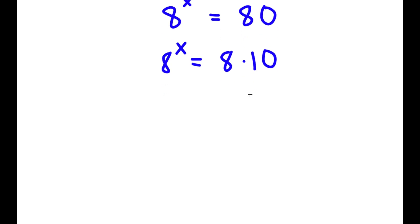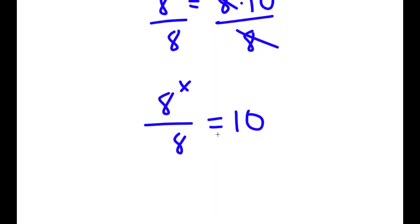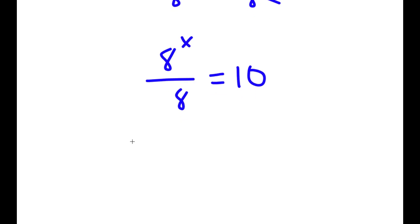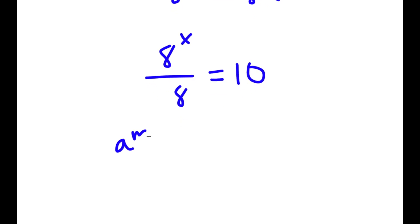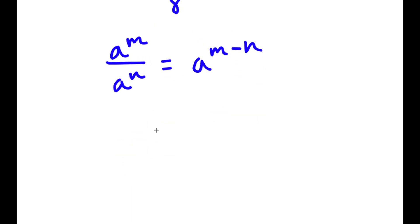Now I'm going to divide both sides by 8. So now I have a to the power of x over 8 is equal to 10. If I have something in the form a to the power of m over a to the power of n, this is equal to a to the power of m minus n. So a to the power of x over a to the power of 1 is going to equal a to the power of x minus 1, which is equal to 10.